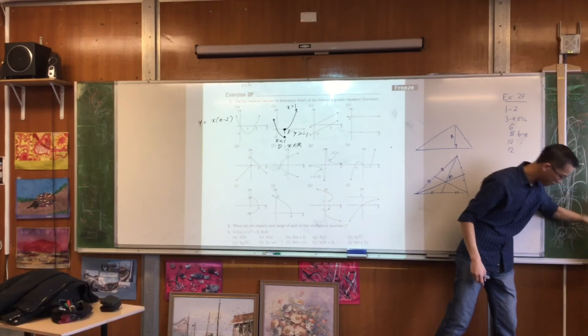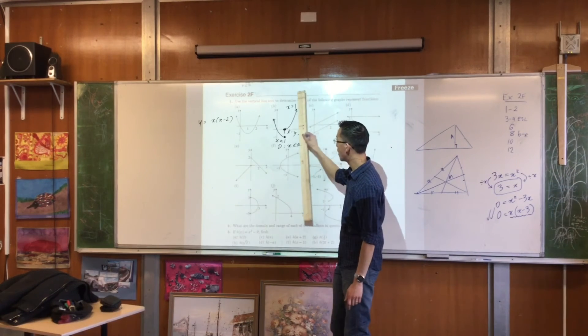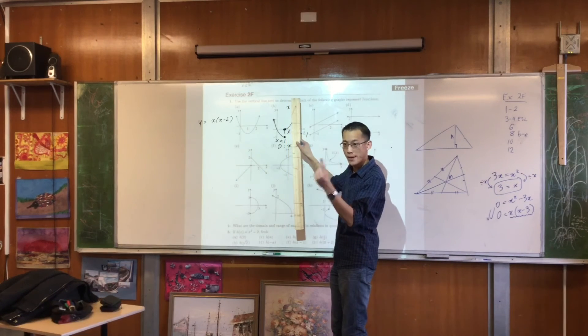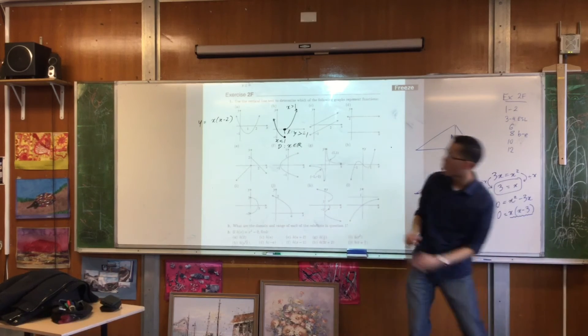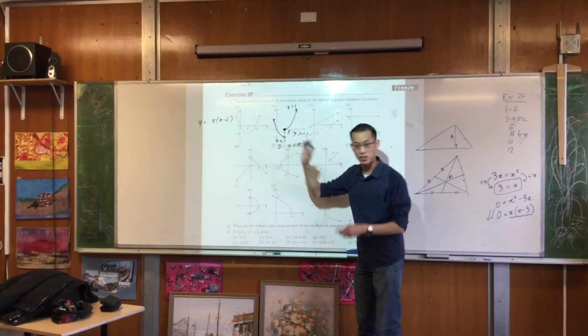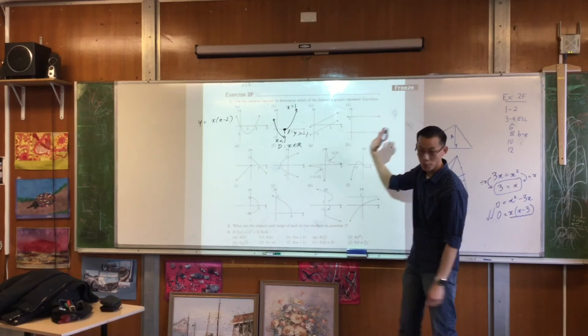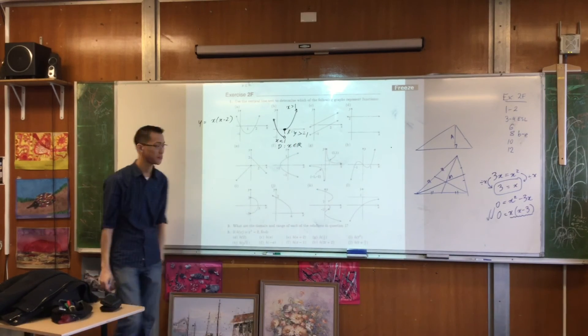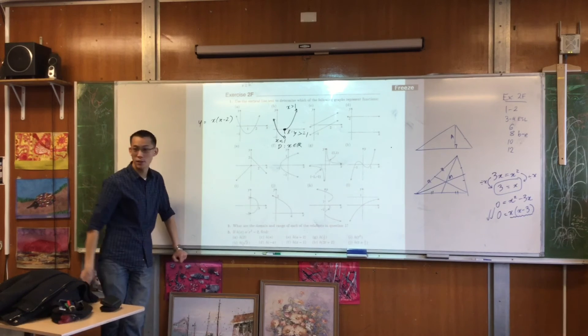Because now if you take the vertical line test, there is exactly one point where you intersect twice. Therefore you've got one input, one x value, which has two outputs. That's no good. So what they're intending to do is to make sure to restrict it such that it is a function. Now when I put the vertical line through, at every point I only intersect once. While I have your attention, do you want to ask me about any of these other ones?